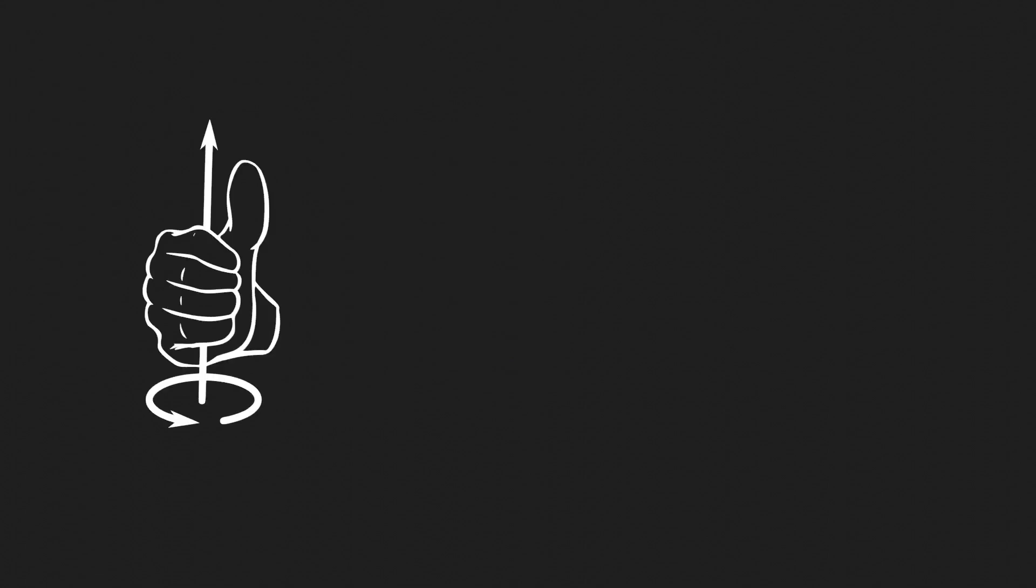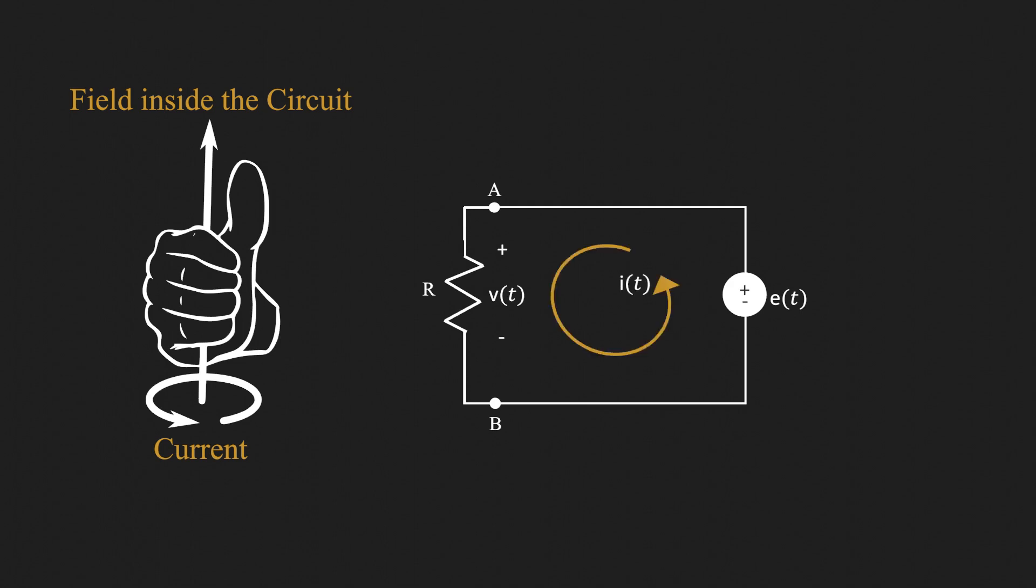If we use our right hand and curl our fingers in the direction of the current in a closed circuit, the thumb will give us the direction of the flux inside the circuit. In order to decrease the flux, we need to produce current in counter-clockwise direction.